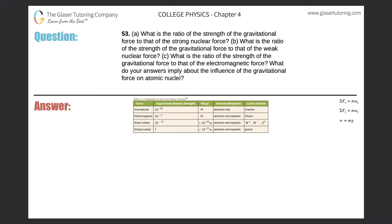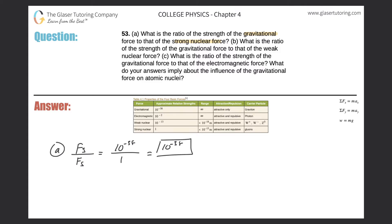Number 53, letter A: what is the ratio of the strength of the gravitational force to that of the strong nuclear force? Looking at the table right from the textbook, the gravitational force is 10 to the minus 38, and the strong nuclear force is 1. So the ratio is simply 10 to the minus 38 — meaning the gravitational force is 10 to the minus 38 times weaker than the strong nuclear force.